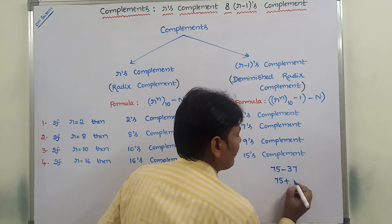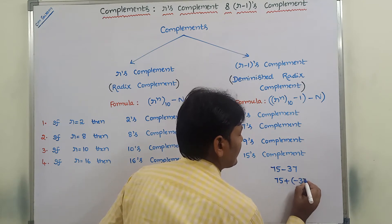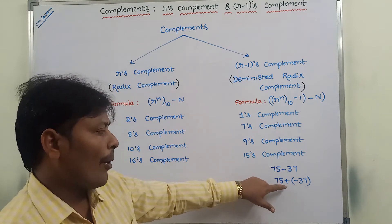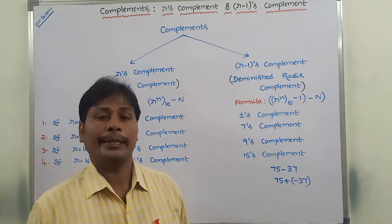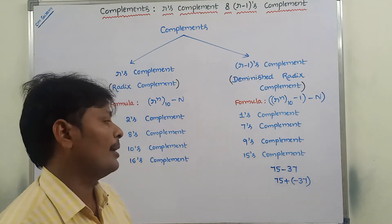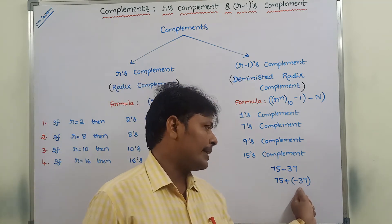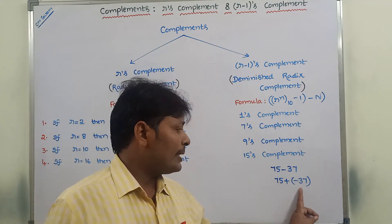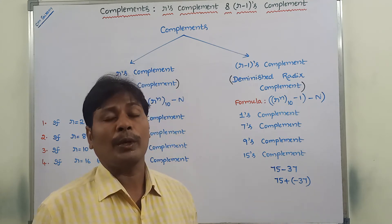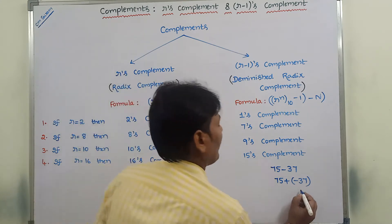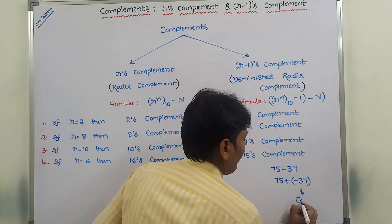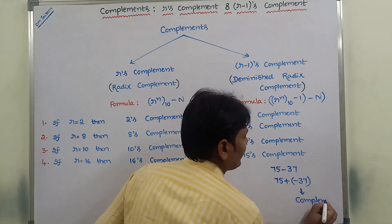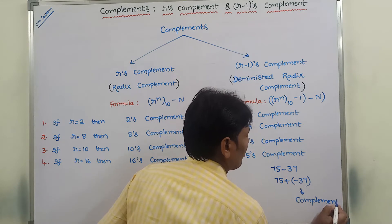For example, 75 plus minus 37 — here the subtraction operation can be converted into addition operation. But how to represent this negative number? To represent this negative number, we have to use complements. So that means complements are mainly used for representing negative numbers.